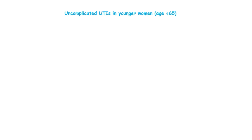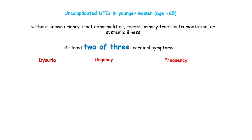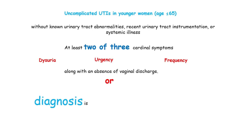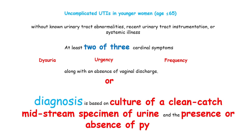Uncomplicated UTIs in younger women under age 65 can be diagnosed in those without known urinary tract abnormalities, recent urinary tract instrumentation, or systemic illness, if they exhibit at least two of three cardinal symptoms of dysuria, urgency, or frequency, along with an absence of vaginal discharge. Otherwise, diagnosis is based on culture of a clean catch midstream specimen of urine and the presence or absence of pyuria.